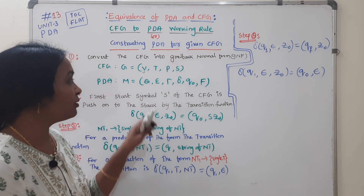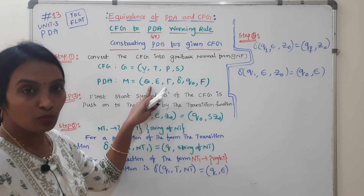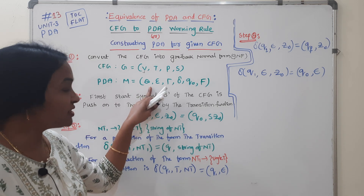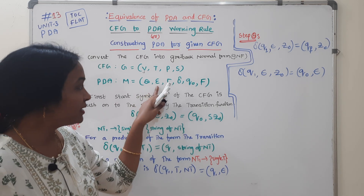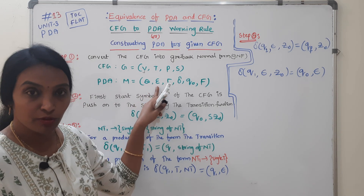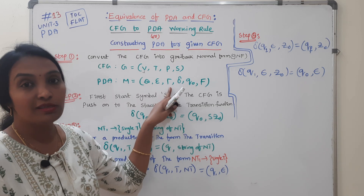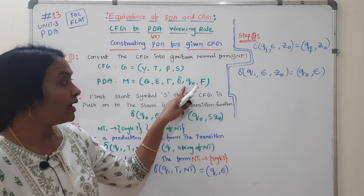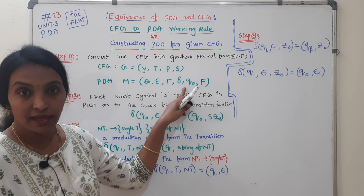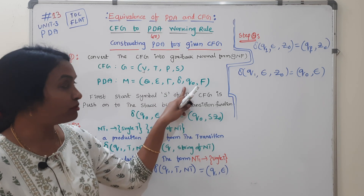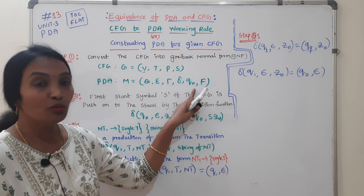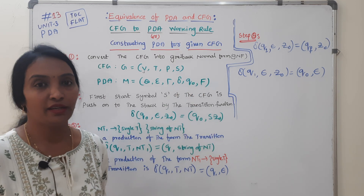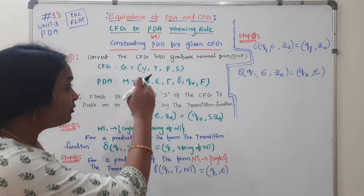PDA is defined as Q, Sigma, Tau, Delta, Q0, F. Q is the set of states. Sigma is the input alphabet. Tau is the stack alphabet. Delta is the transition function. Q0 is the initial state. F is the final state.